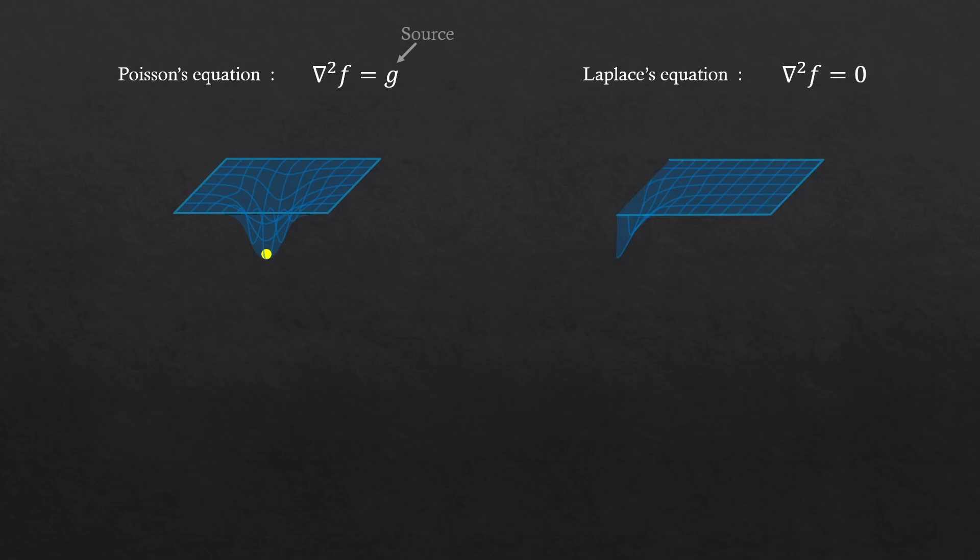But then in the Poisson's equation, we could gather information about the field because there's a source to refer to. But in Laplace's equation, how can we get any information about the field when there's nothing to refer to? This is why, for the Laplace's equation, we need to have something called boundary conditions. If we at least know how the field looks on the boundaries, the edges here, we should then be able to start drawing the shape of the field. So yeah, Poisson's equation describes the field when something is present. Laplace's equation describes the field when there's nothing, but we would need boundary information to study.